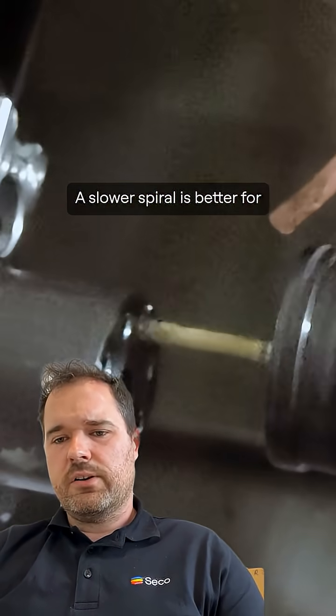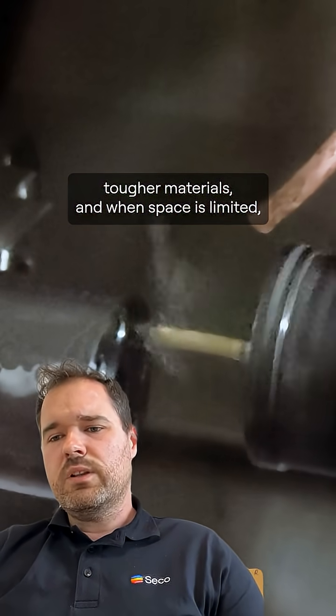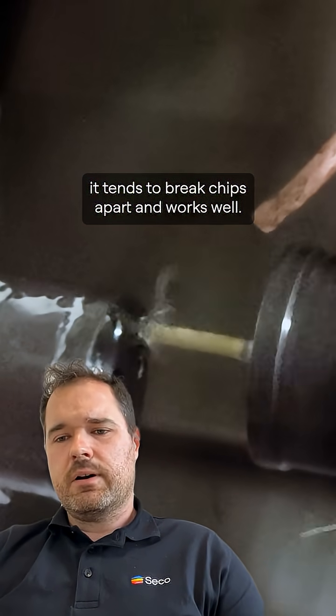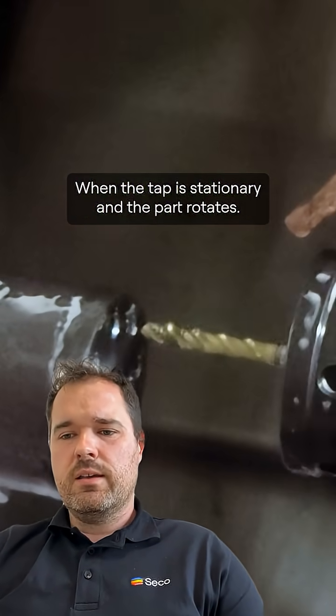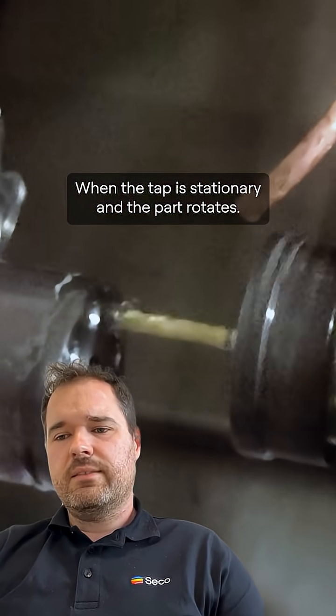A slower spiral is better for tougher materials and when space is limited. It tends to break chips apart and works well when the tap is stationary and the part rotates.